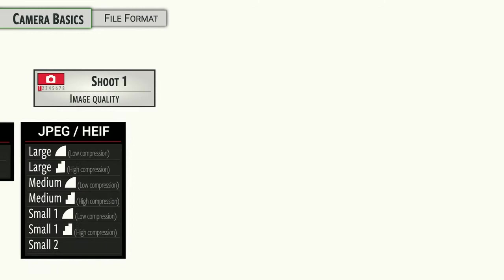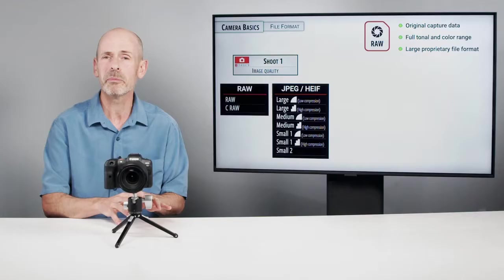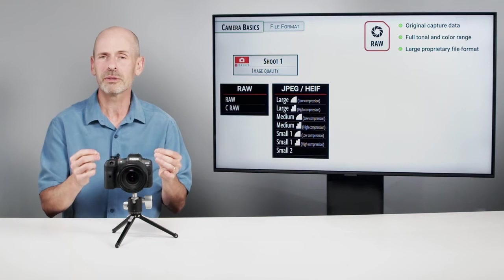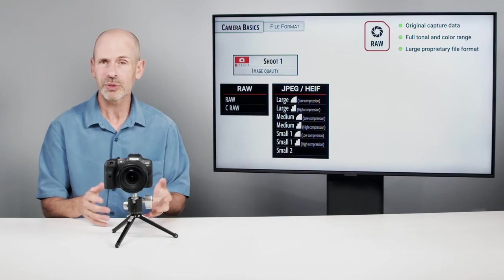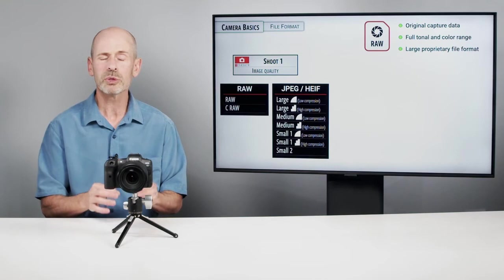All right, file format. When you record images with a digital camera, they get stored on a memory card with a particular type of format. Now one option, maybe the best option, is the raw format. This is the original information off the sensor and it's getting you all the megapixels and all the tonal range that your camera can possibly capture.